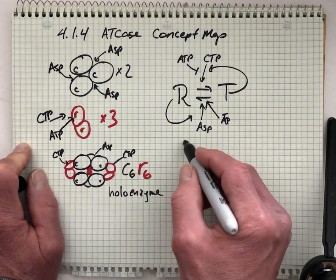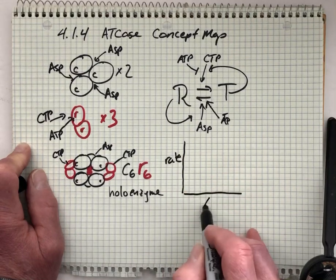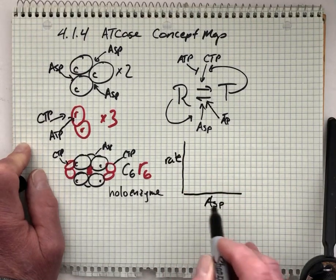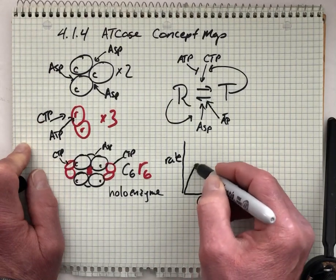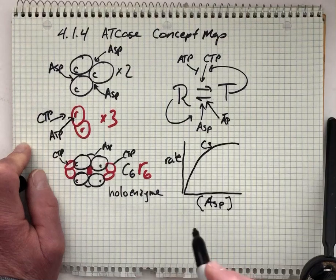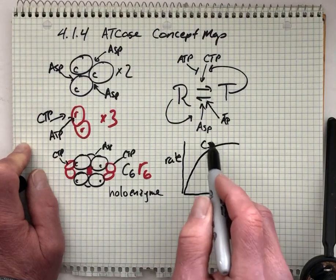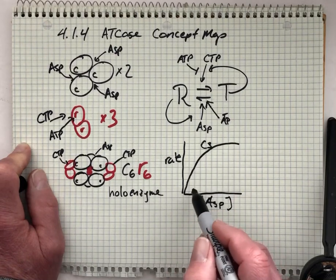We can draw what the rate as a function of aspartate concentration curve would look like for just the C3 units. And it looks just like a Michaelis-Menten enzyme, and this characterizes the R form of the enzyme.